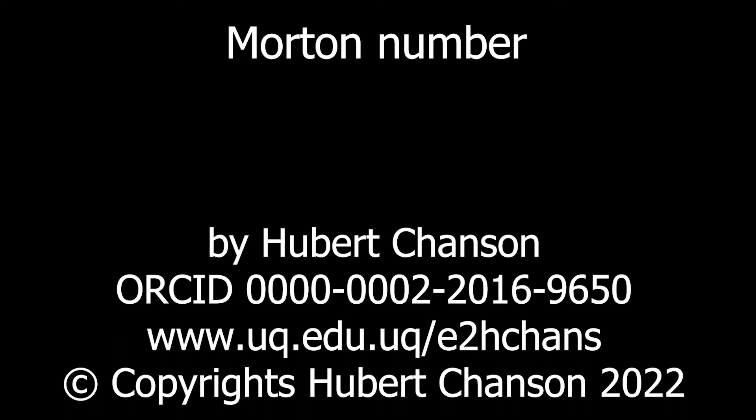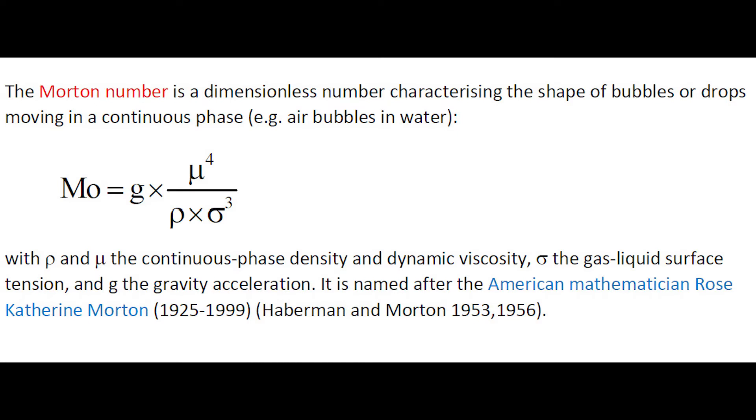The Morton number is a dimensionless number characterizing the shape of bubbles or drops moving in a continuous phase. It is named after the American mathematician Rose Catherine Morton.